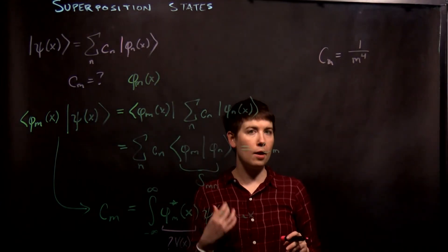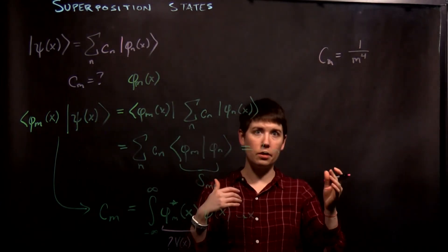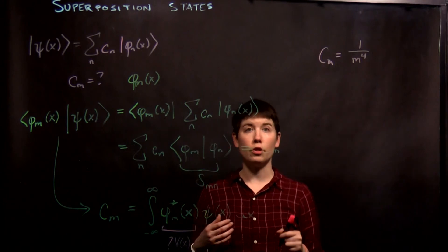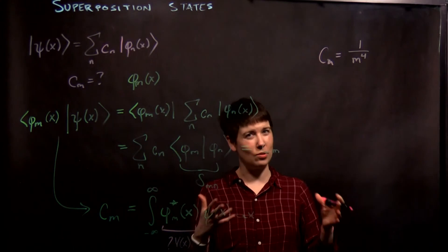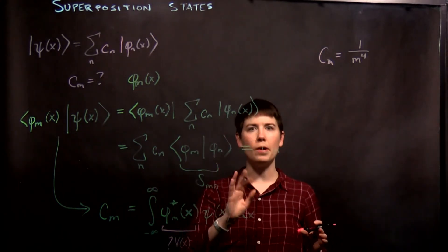That tells you the higher the m is, the higher the energy is, the smaller your coefficient. You can then ask the question, well, if I add those up, does it actually normalize? Don't worry about that right now. I'm just trying to show a picture.